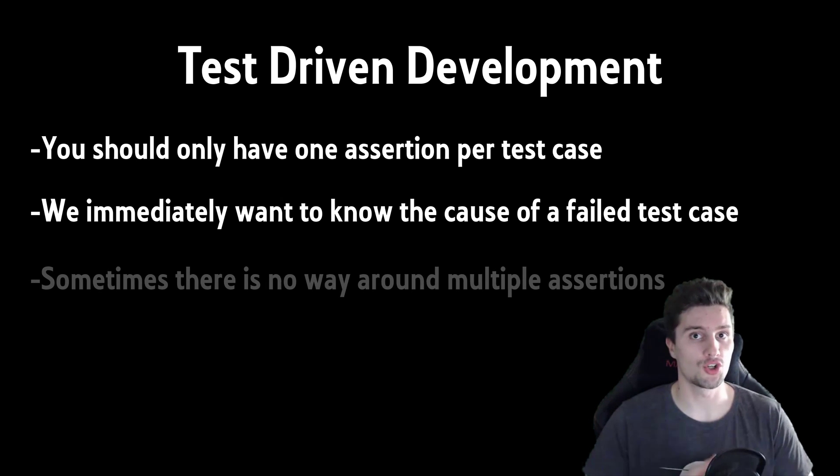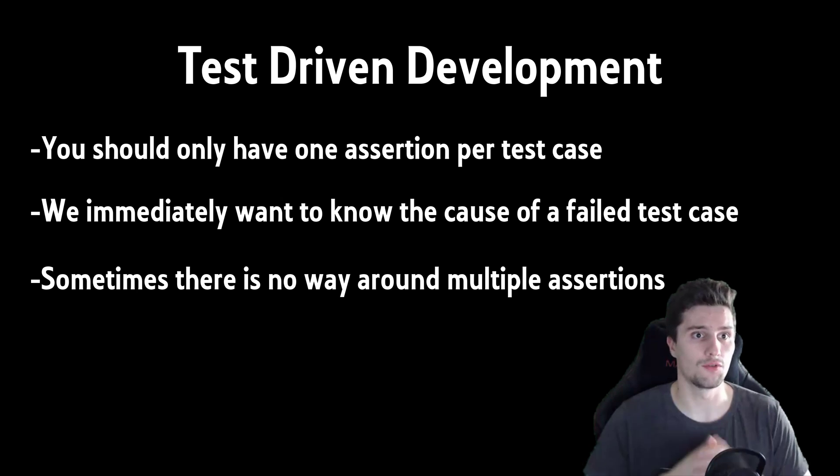But sometimes you just can't prevent having multiple assertions, and then that's fine. For example, if you want to test if your loading properly works, if your loading bar or progress bar is displaying, then you first want to check if a live data is emitting that loading status, and then you also want to assert another time if that live data is emitting another value so the loading basically stops. In that case we must have several assertions, but you should only have as little as possible.